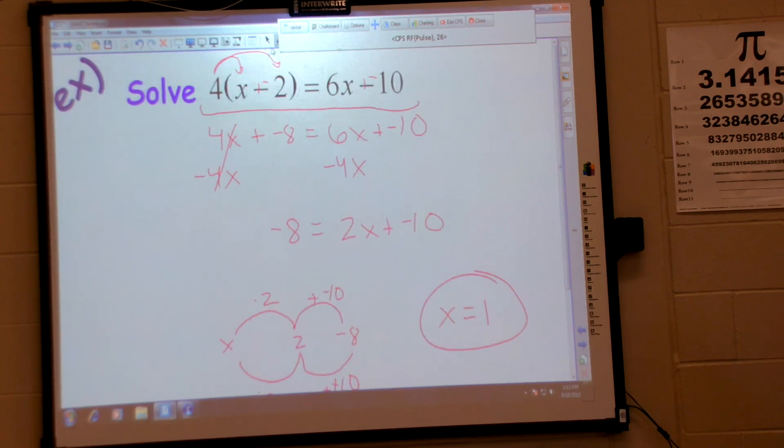All you have to do is plug in 1 for this x, 1 for this x, simplify both sides. Okay? If we have time, we'll do one here, but I want to keep zipping through. Questions? Questions?